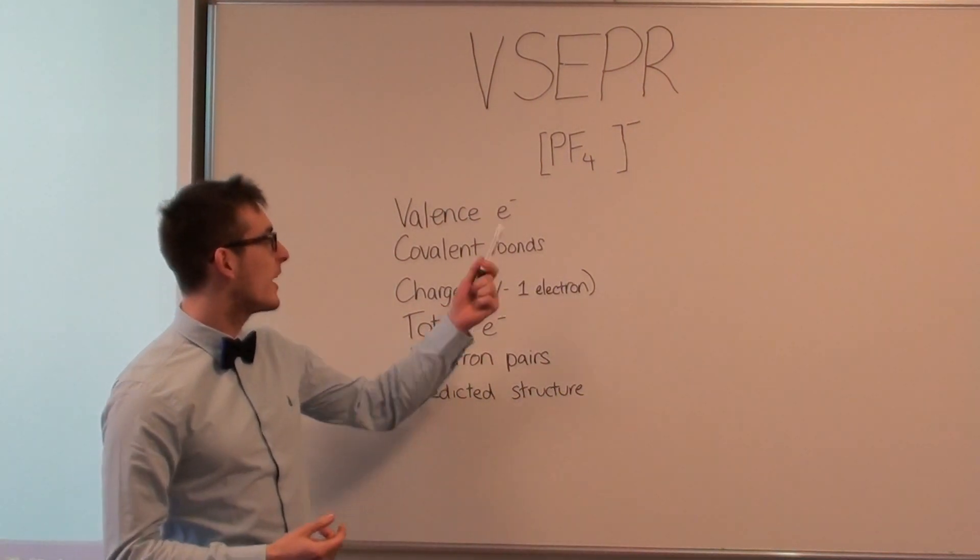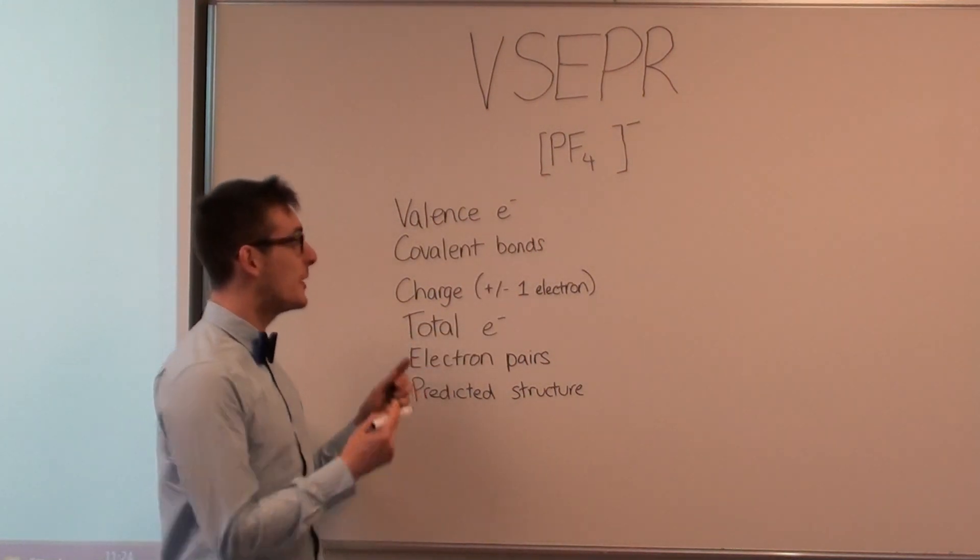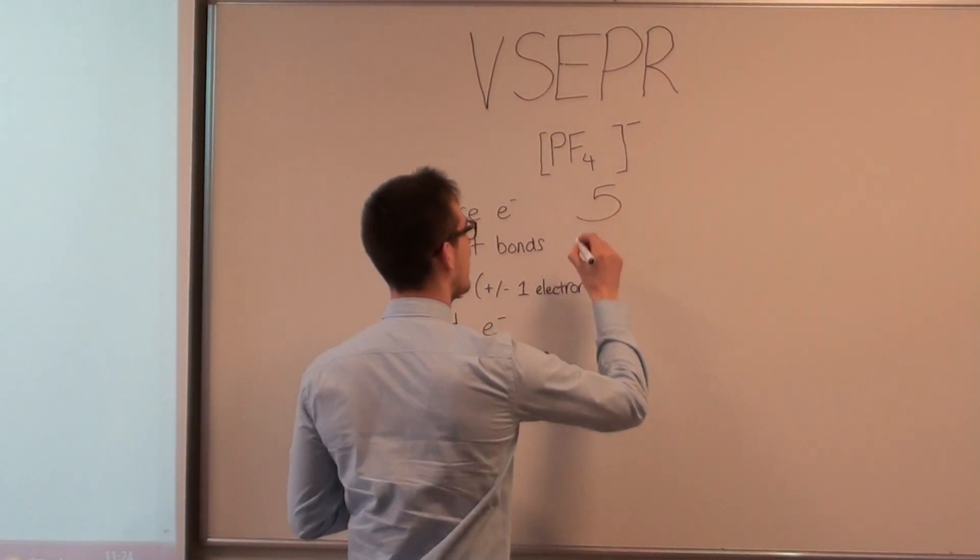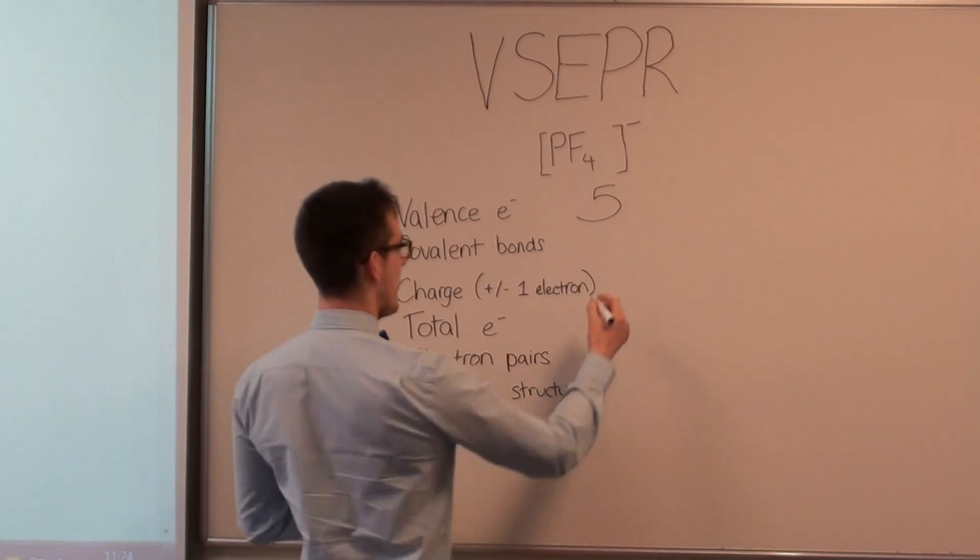The first thing we're going to do is determine the valence electrons in phosphorus, which is how many? Five. Nice. And how many covalent bonds does it have to fluorine? Four. Sweet.